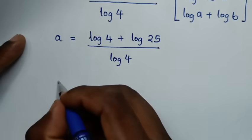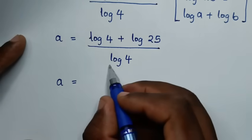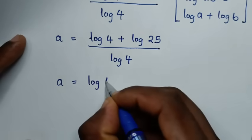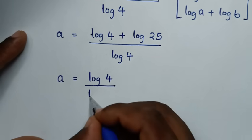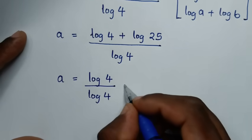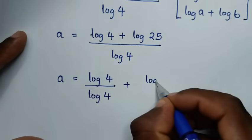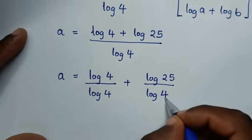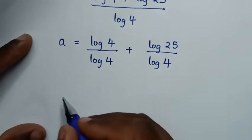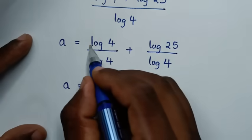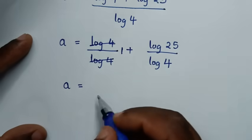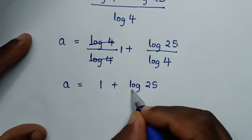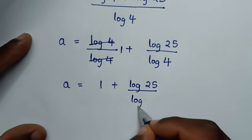In the next step, a is equal to — we divide each term by log of 4. So it will be log of 4 over log of 4 plus log of 25 over log of 4. Then log of 4 divided by log of 4 is 1, so it will be 1 plus log of 25 over log of 4.